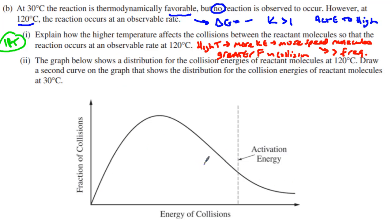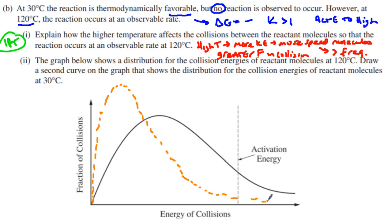Then we have the graph. It says the graph shows the distribution of collision energies of the reactive molecules at 120°C. We're going to draw the graph at 30°C. The peak will be higher and shifted to the left, because we still have the same number of molecules. But it tails off sooner — there are fewer molecules that have enough kinetic energy to exceed the activation energy. B2 is worth two points: one point for the peak being above and to the left, and one point for the curve being below the given curve in the region of the activation energy.